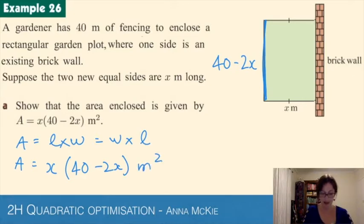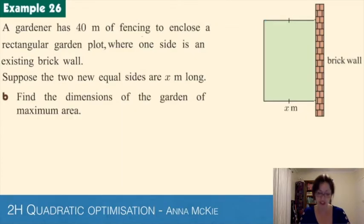The second part of this question is to find the dimensions of the garden for maximum area. We eventually want the width and length, and we have to work out when a maximum will occur for this scenario. For a maximum, what value of a will we have? To get a maximum, we need that shape, so we need a less than zero.